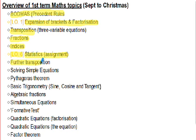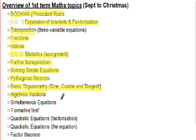We continued with algebra in lessons: further transpositions such as v = u + at or v² = u² + 2as — more complicated equations that crop up in the papers. Then we looked at solving simple equations — equations with one unknown, like x + 3 = 3x − 5. Then some trig with Pythagoras' theorem, basic trigonometry, sine, cosine, and tan functions — SOHCAHTOA. We also looked at algebraic fractions and simplifying those, which often crop up on the papers.